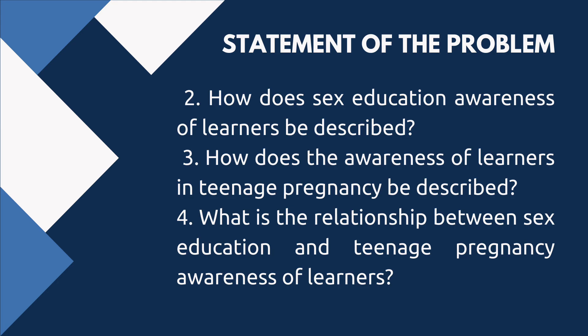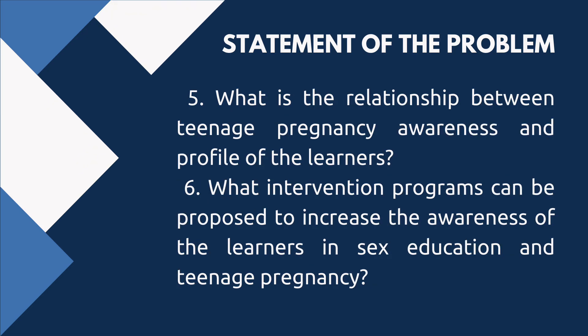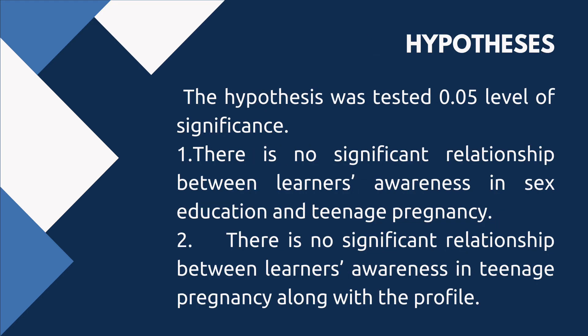1.5 socioeconomic status, and 1.6 relationship status. Question 2: How does sex education awareness of learners be described? Question 3: How does the awareness of learners in teenage pregnancy be described? Question 4: What is the relationship between sex education and teenage pregnancy awareness of learners? Question 5: What is the relationship between teenage pregnancy awareness and profile of the learners? Question 6: What intervention programs can be proposed to increase the awareness of learners in sex education and teenage pregnancy?